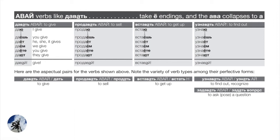Adding prefix в to ставать gives вставать, meaning to get up, to rise, to get out of bed: встаю, встаёшь, встаёт, встаём, встаёте, встают. Imperative: вставай. Узнавать means to find out information, to learn: узнаю, узнаёшь, узнаёт, узнаём, узнаёте, узнают. Imperative: узнавай.